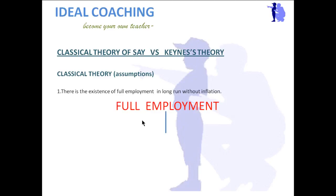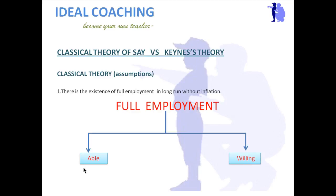Full employment means two things should be fulfilled. First, a person should be able — meaning properly educated, documented, and physically fit to do that kind of job. Second, he should be willing — meaning he has the interest to work. Additionally, these able and willing persons should be ready to work at the wages available at that time.